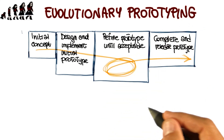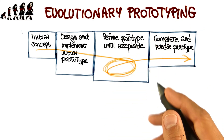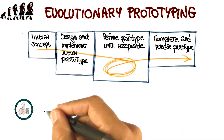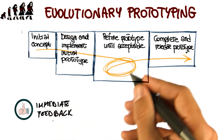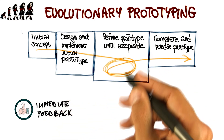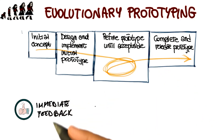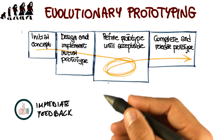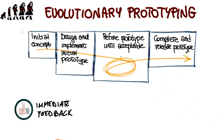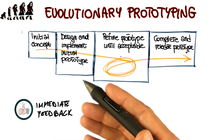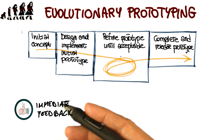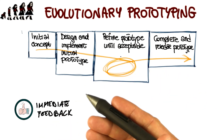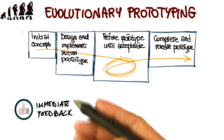The main advantages and disadvantages of evolutionary prototyping are as follows. The main advantage is immediate feedback — developers get feedback immediately as soon as they produce a prototype and show it to the customer. Therefore, the risk of implementing the wrong system is minimized.